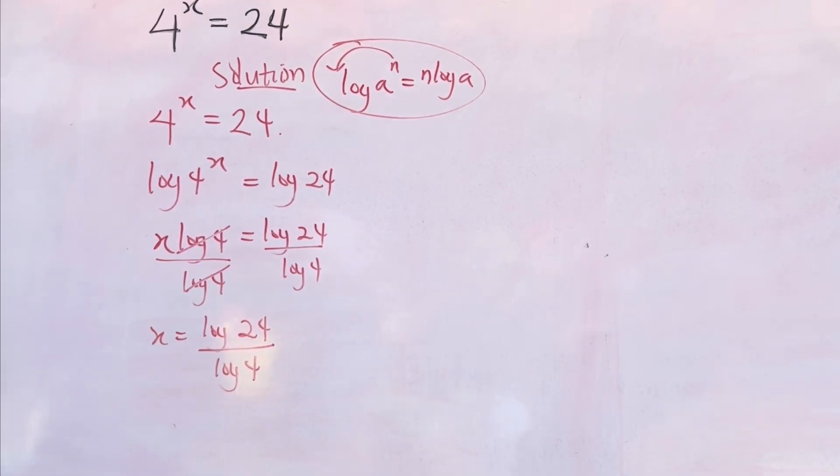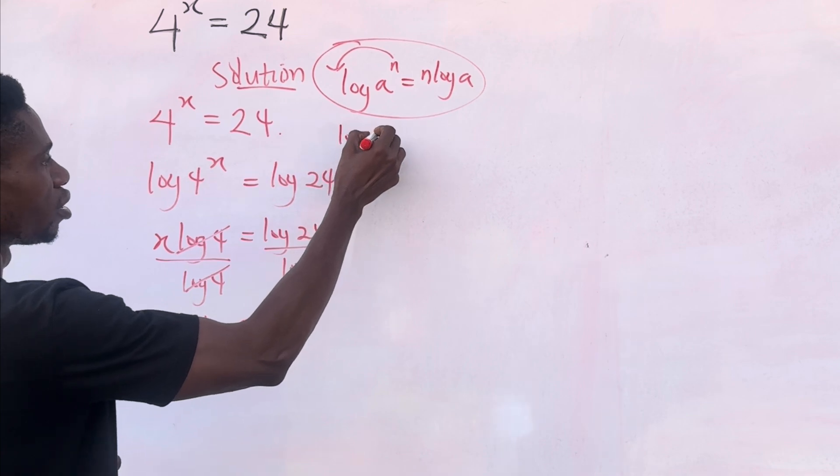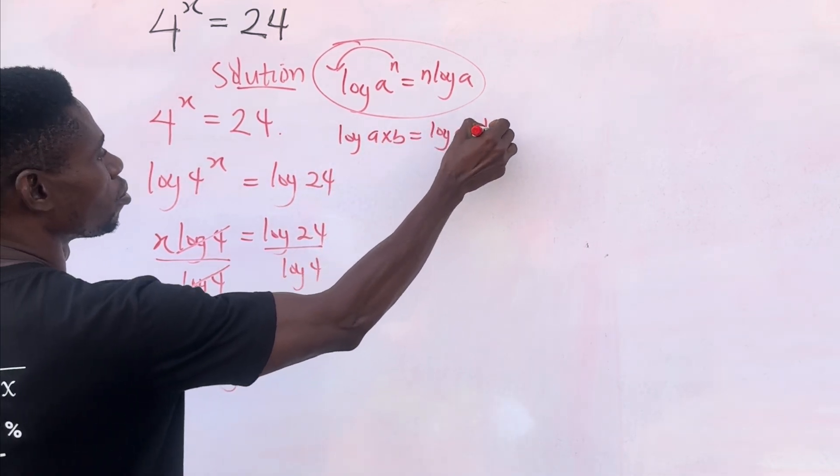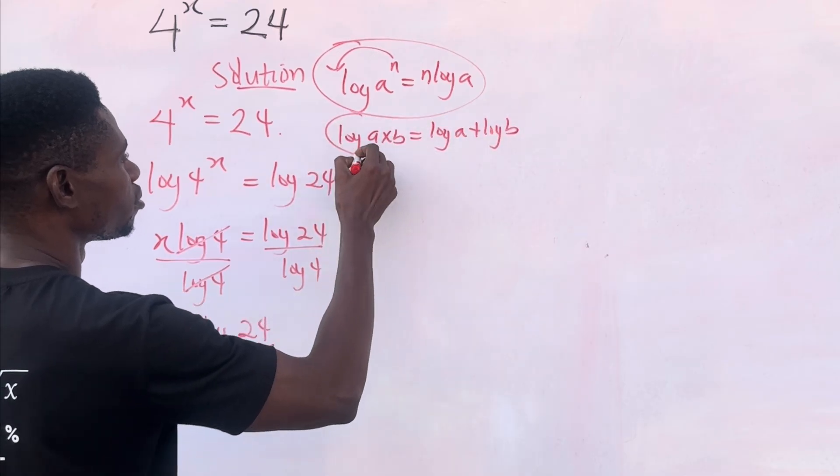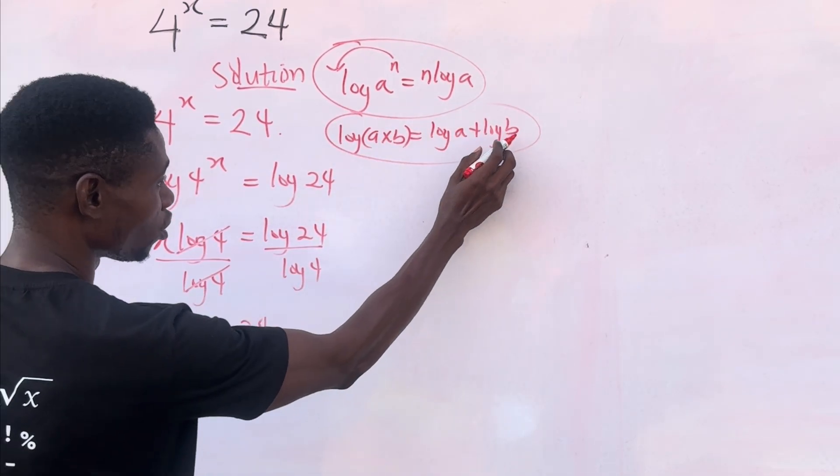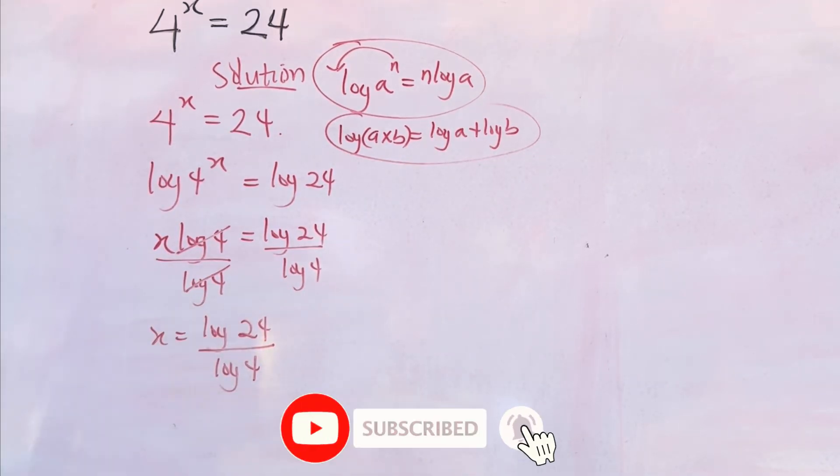But we can break this further. Remember this law of logarithms that says log a multiplied by b equals to log a plus log b. So if you have a multiplied by b, you can be written as log a plus log b under the laws of logarithms.